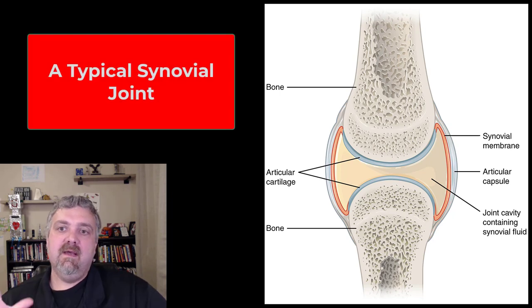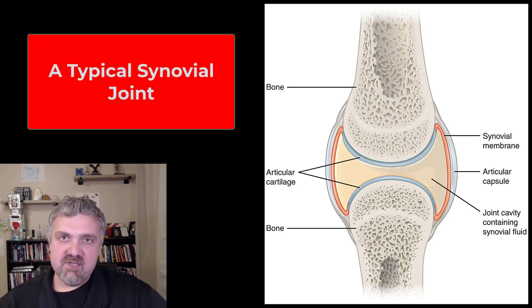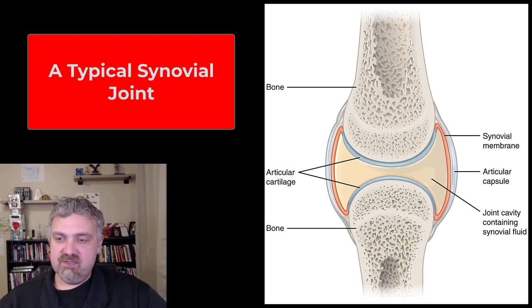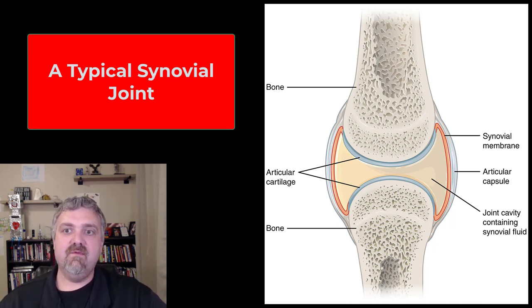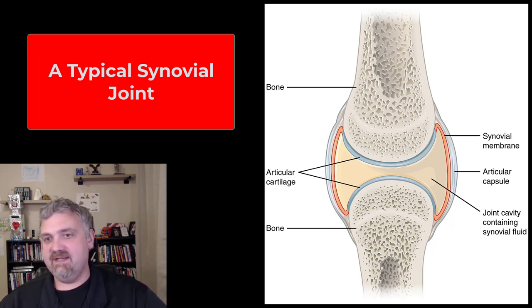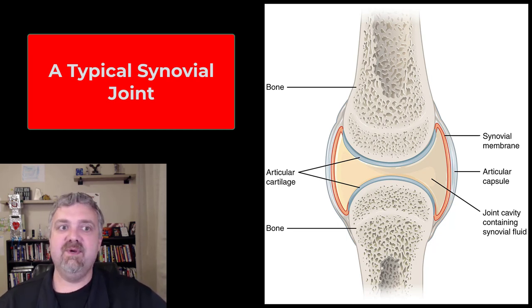Hey everybody, Dr. O here. I'm going to go into much more detail about joints and joint structures like bursas and these types of things in the future, but for now I just want to talk about what a typical synovial joint looks like, so this is about as textbook as you're going to get here.